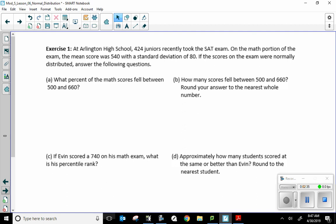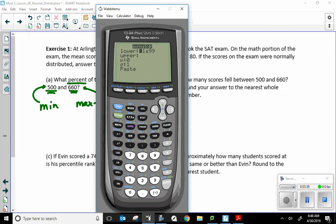And it gives me the exact same screen I have right here. Beautiful. So we are going to use this to find percentages. Now, what's the best way to understand how it works? To actually use it. So let's move forward and see what we have. Exercise 1. At Arlington High School, 424 juniors recently took the SAT exam. On the math portion of the exam, oh, I love it when we talk math. Makes me want to drink coffee. Anyways, on the math portion of the exam, the mean score was 540 with a standard deviation of 80. If the scores in the exam were normally distributed, answer the following questions.